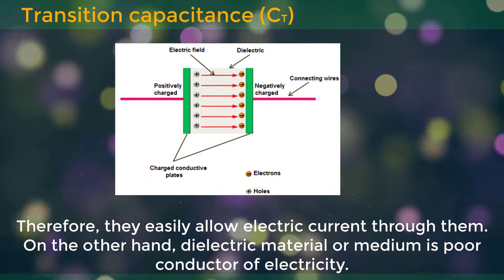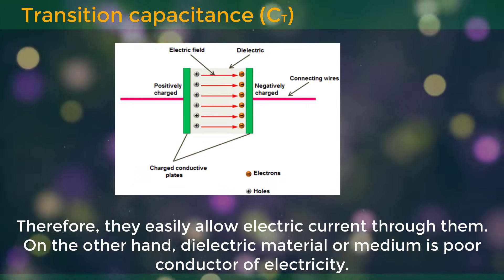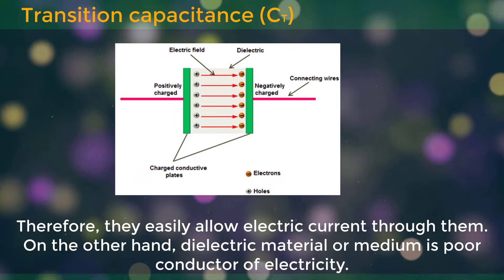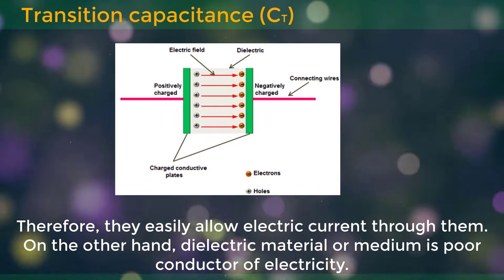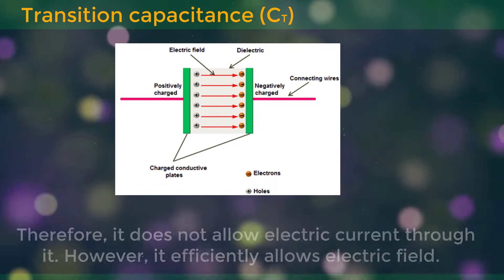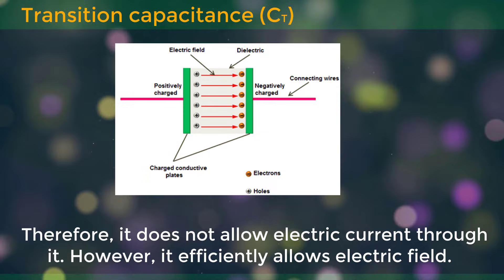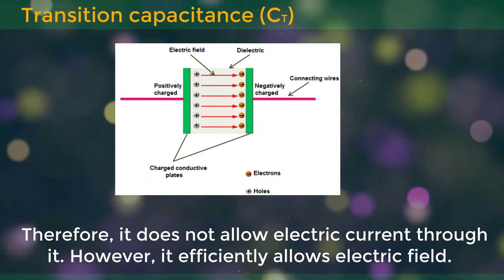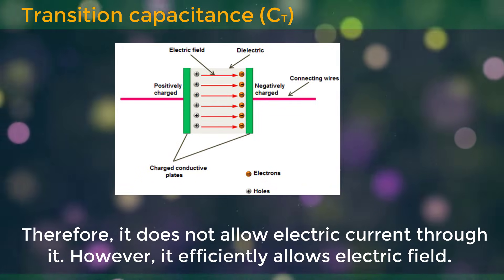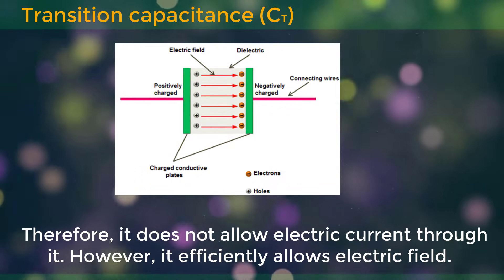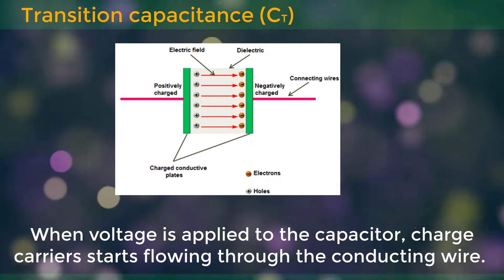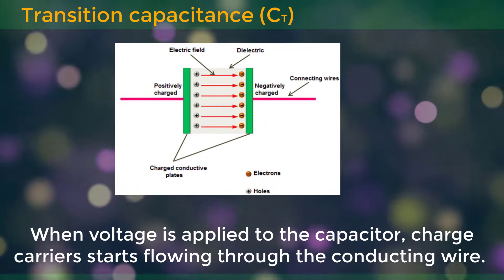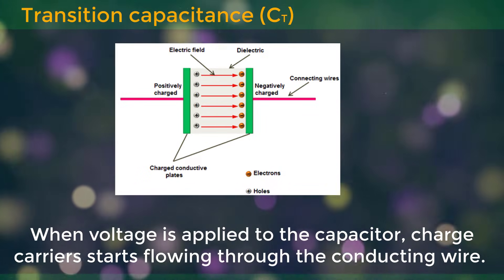On the other hand, the dielectric material or medium is a poor conductor of electricity. Therefore, it does not allow electric current through it. However, it efficiently allows electric field.